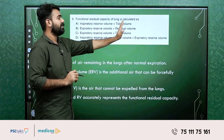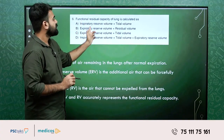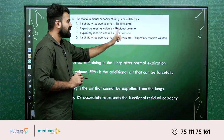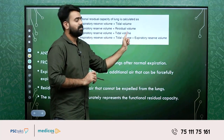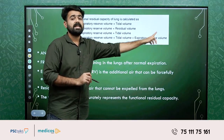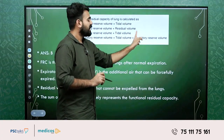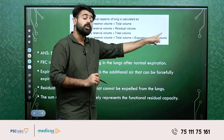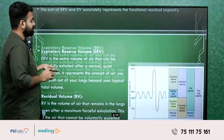Inspiratory reserve volume plus tidal volume is called the inspiratory capacity. And expiratory reserve volume plus residual volume is the functional residual capacity. Then expiratory reserve volume plus tidal volume plus inspiratory reserve volume plus residual volume gives the total lung capacity. That covers the first question.